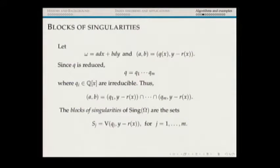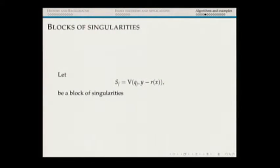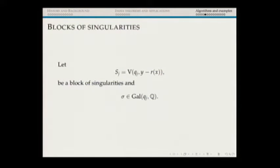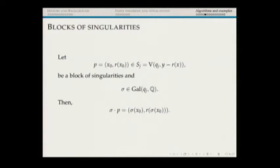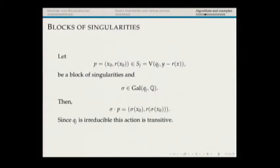Since everything is defined over Q, taking an element sigma of the Galois group of QJ over Q and a point P = (X0, R(X0)) where X0 is a root of QJ: sigma acts on P as (sigma(X0), R(sigma(X0))). Since QJ is irreducible, this action is transitive. So I can use the Galois group to move points around within one block.